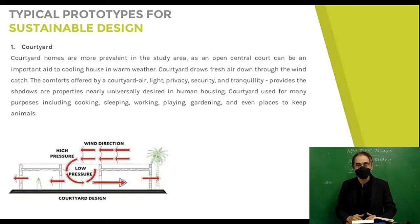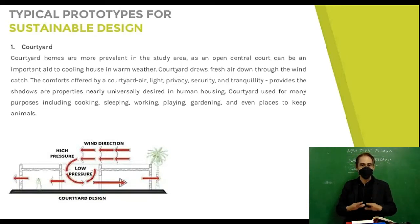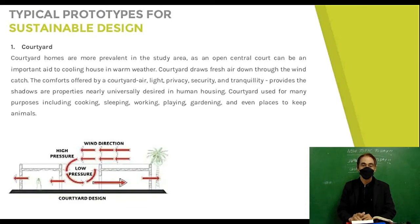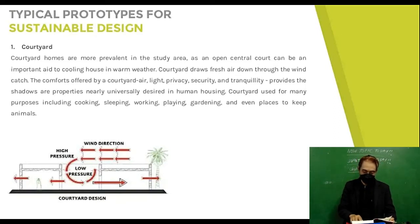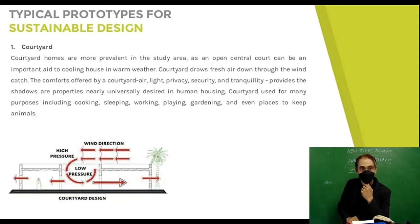Typical prototypes for sustainable design — number one is the courtyard. Courtyard homes are prevalent as an open central court can be an important aid to cooling a house in warm weather. The courtyard draws fresh air down to a wind catch. The comforts offered by a courtyard — air, light, privacy, security, and tranquility — are nearly universally desired in human housing. Courtyards are used for many purposes including cooking, sleeping, working, playing, gardening, and even keeping animals.